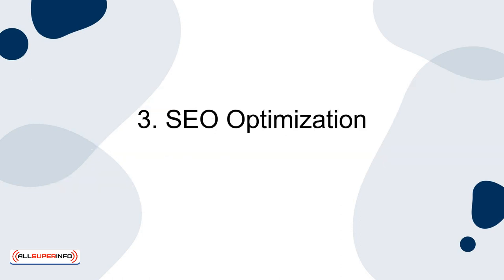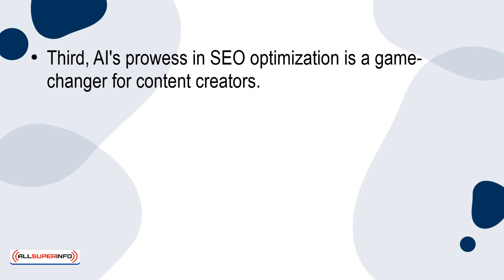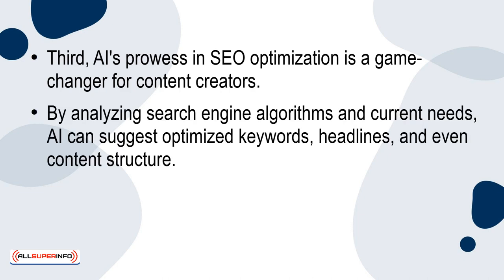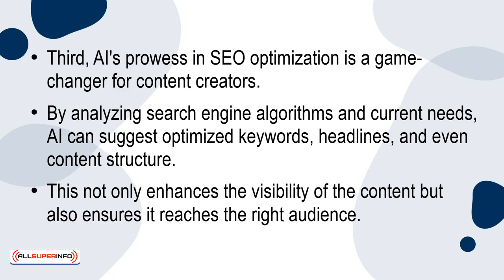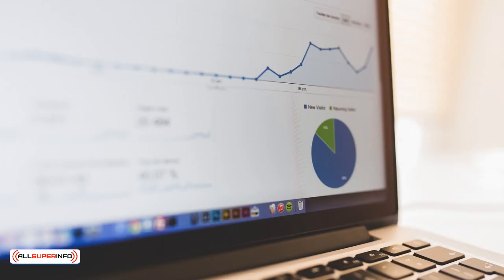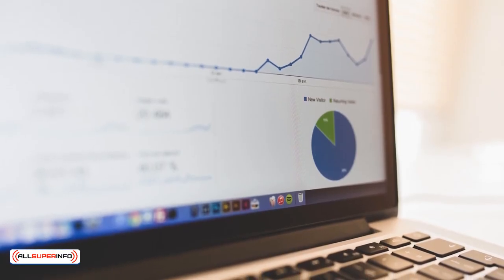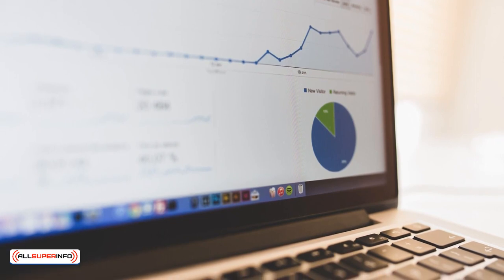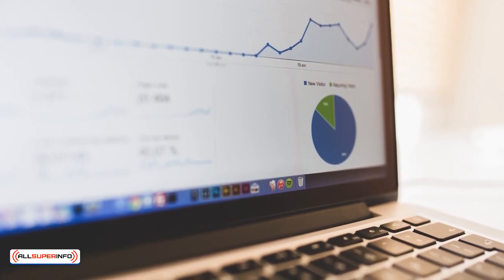Third: SEO Optimization. AI's prowess in SEO optimization is a game-changer for content creators. By analyzing search engine algorithms and current needs, AI can suggest optimized keywords, headlines, and even content structure. This not only enhances the visibility of the content, but also ensures it reaches the right audience. AI-driven SEO tools are invaluable in a digital landscape where search engine rankings can make or break the visibility of content.